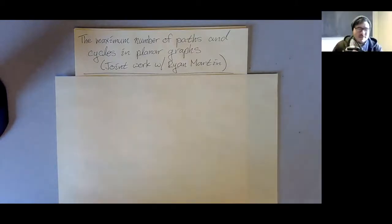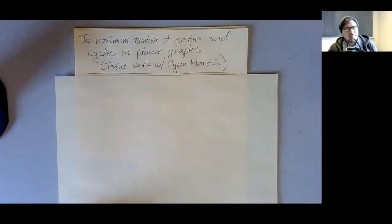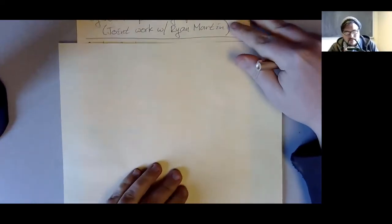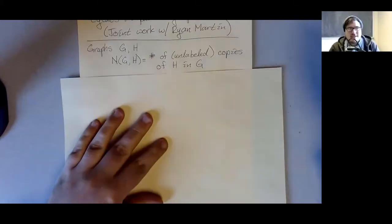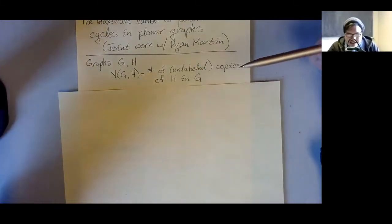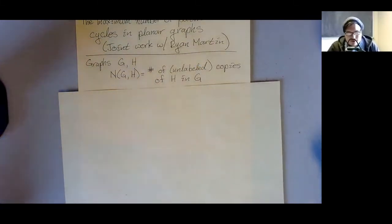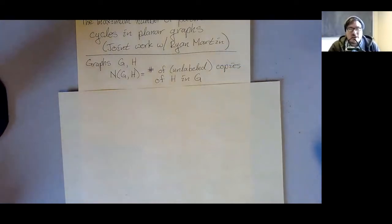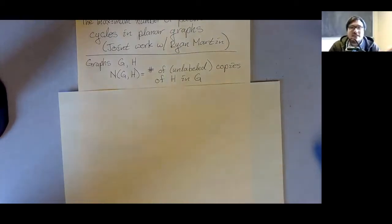Thanks, Drew. I'm going to talk about some recent work with Ryan Martin that's exactly about what the title says — trying to maximize the number of paths or cycles in a planar graph. In general, for graphs G and H, we define n(G,H) to be the number of copies of H in G. We're talking about unlabeled copies, and by a copy I just mean a subgraph — I don't care if it's induced or not.